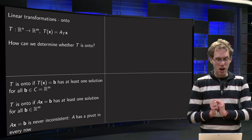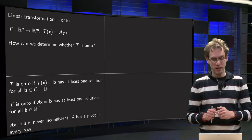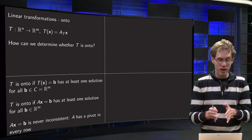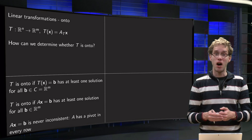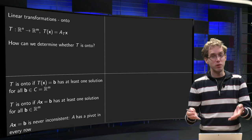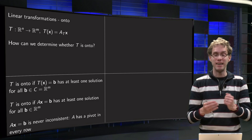Well, T is onto if T(x)=b has at least one solution for all b in its codomain, and the codomain in this case is Rᵐ. So we wonder whether T(x)=b can always be solved for any b's, for any right hand side.